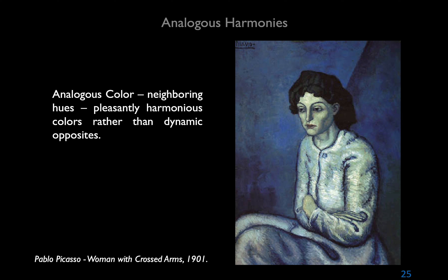Analogous colors are neighboring hues — pleasantly harmonious rather than dynamic opposites. We can speak of closely related colors or simply of working with reds, greens, or blues. Hence we refer to Picasso's Blue Period — not a truly monochromatic scheme, but a generally bluish harmony that would typically range from green to violet with a true blue at the center.